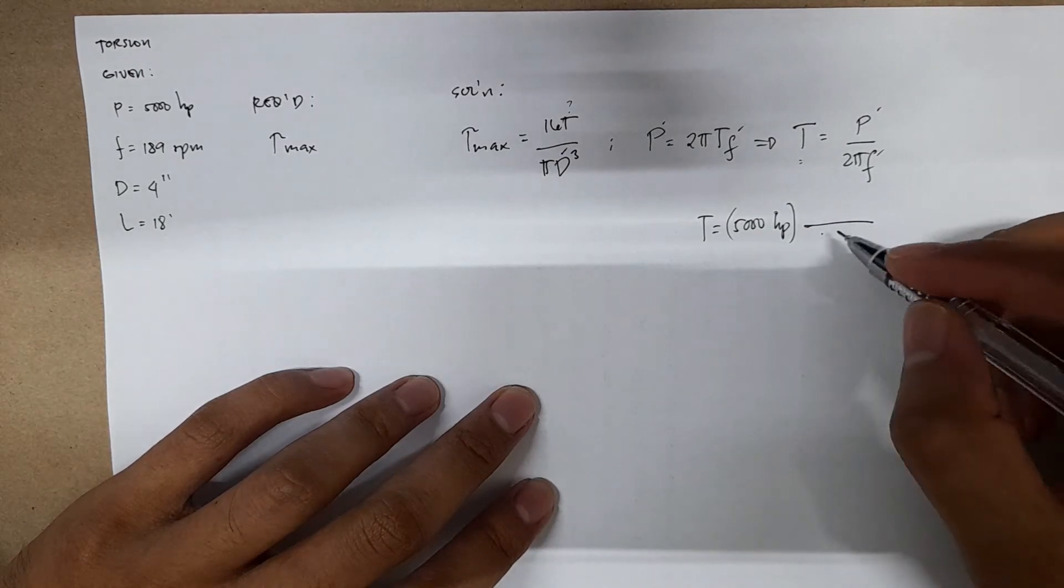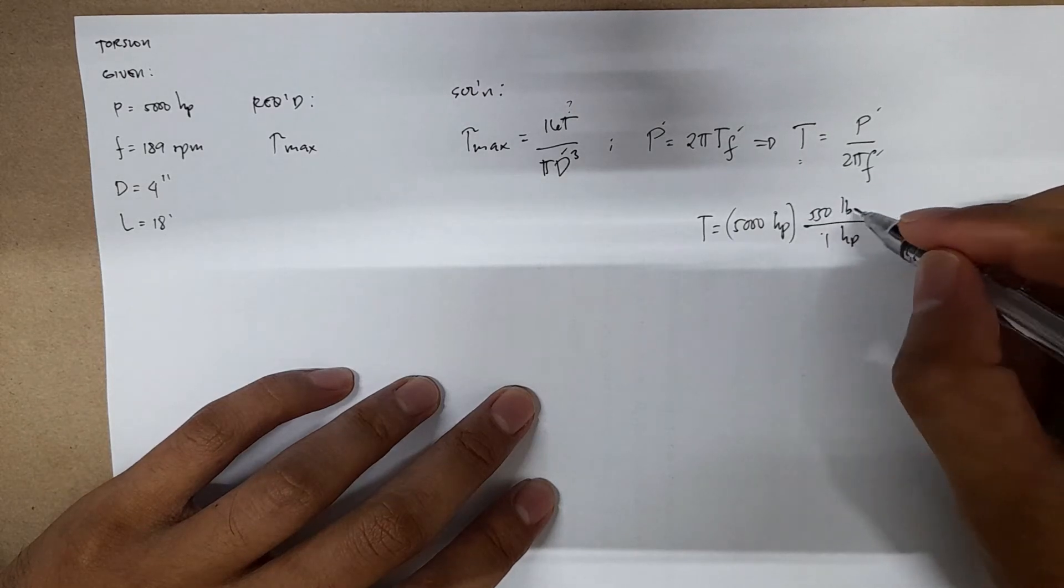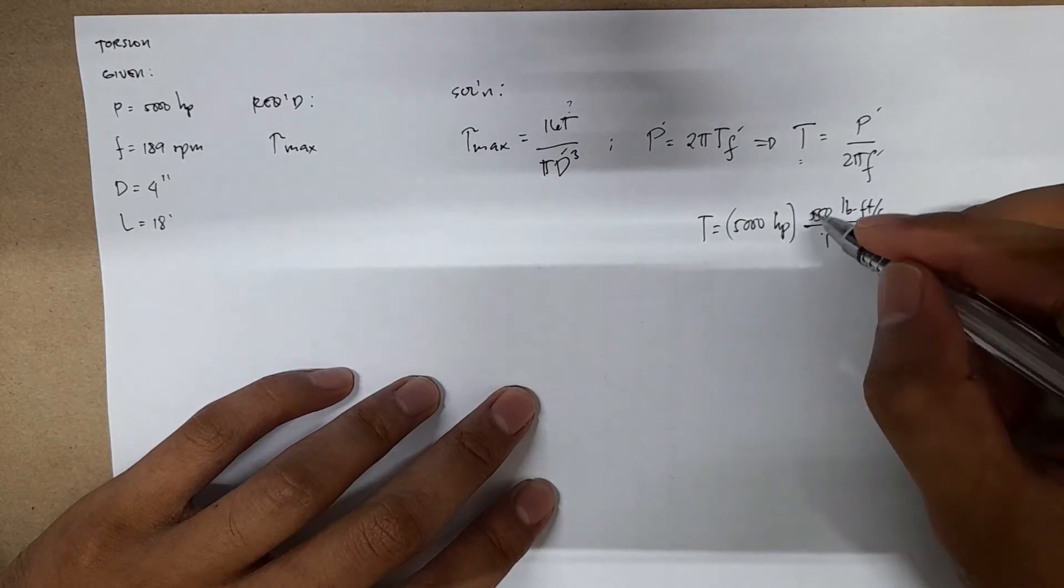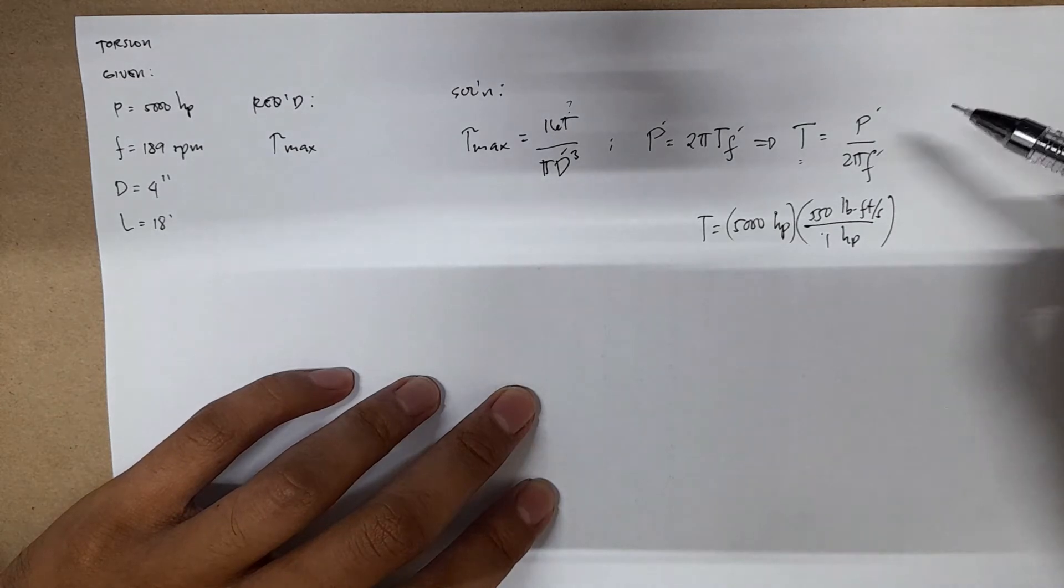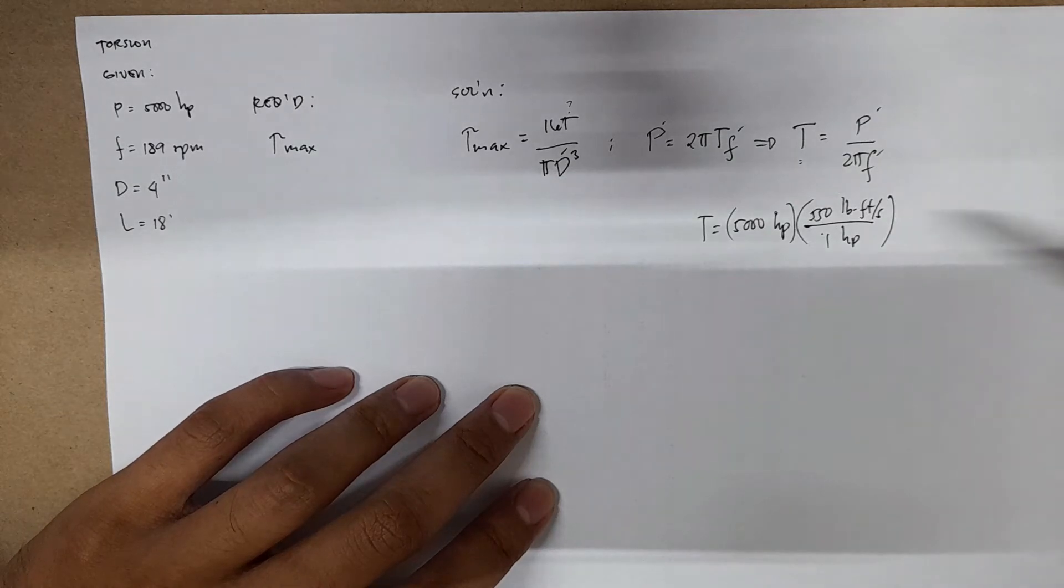One horsepower is 550 pound foot per second. And since our frequency here is in revolutions per minute, we also have to convert this.